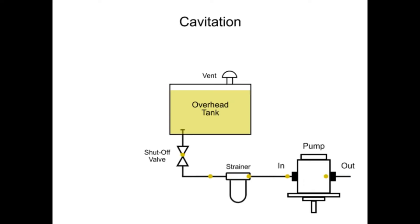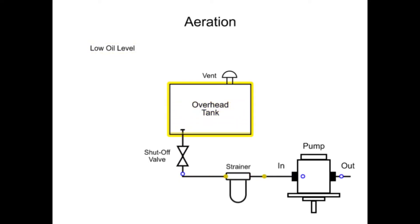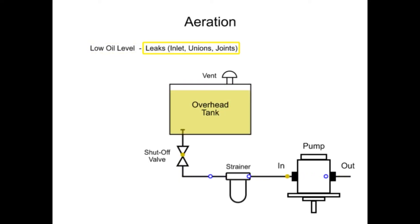Another form of cavitation is called aeration and is caused by air entering the oil stream. This can occur for a variety of reasons, including a low oil level in the reservoir or leaks in the inlet plumbing line.